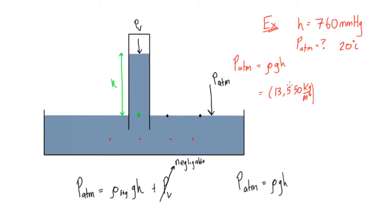Okay, that's better. So we have 13,550 kilograms per cubic meter times g, the acceleration due to gravity, 9.81 meters per second squared, times 760 millimeters, or 0.76 meters.